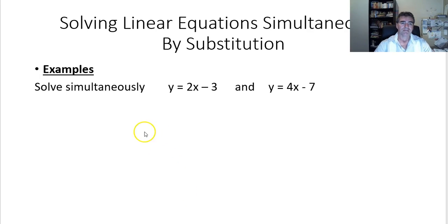Let's have a look at an example. We want to solve these two equations simultaneously. We have a linear function here and a linear function here. And we want to find out what x value and y value satisfy both equations at the same time. One equation is y = 2x - 3, and I'm going to label that number 1. And I'll do the same thing with the other equation, I'll call it equation 2.